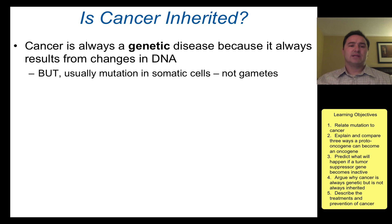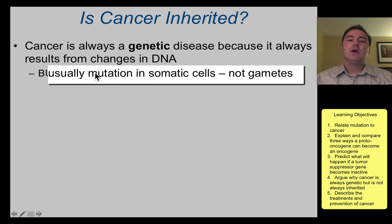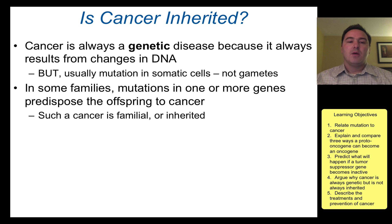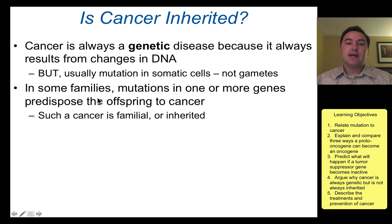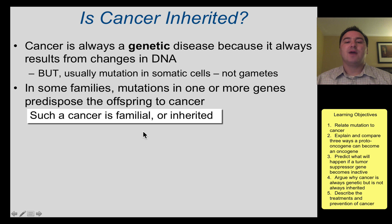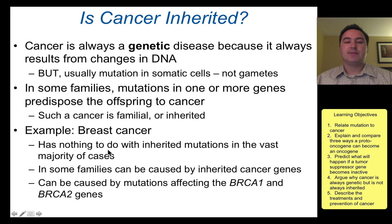Many people ask: is cancer inherited? Cancer is always a genetic disease because it's based on the DNA. But it's usually occurring in the somatic cells — not the germline cells, not the eggs and sperm. But when it does occur in the germline cells, in the gametes, then it can become familial. When it is familial, the mutations in one or more genes can predispose the offspring to having cancer, and this is when a cancer is considered familial or inherited.